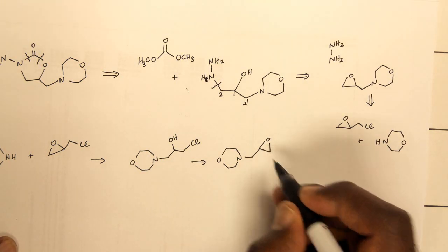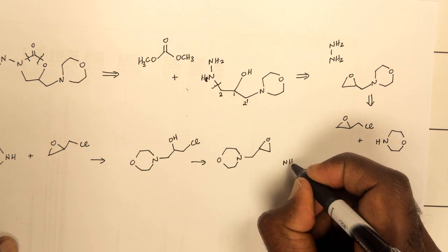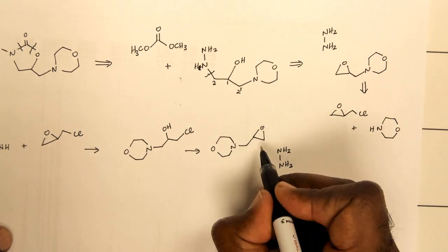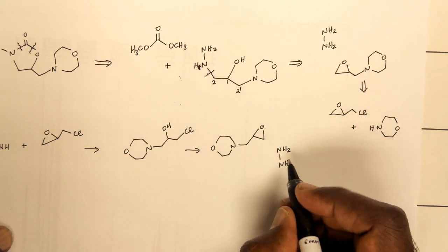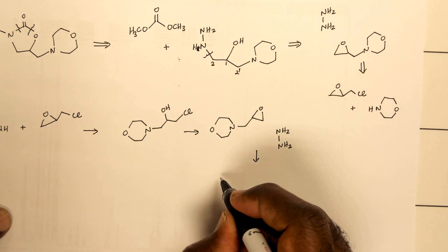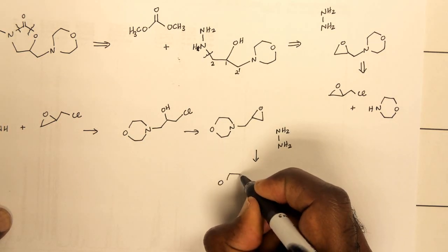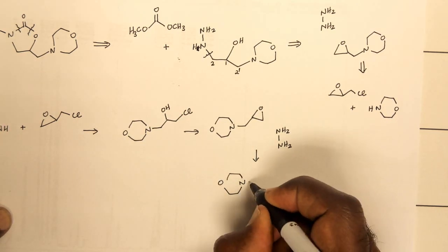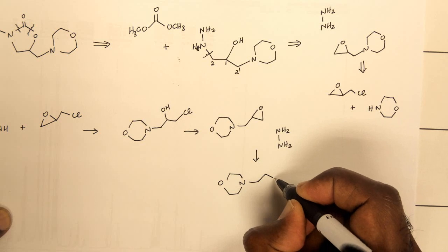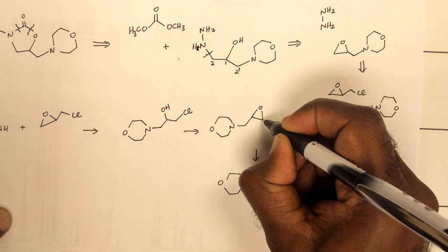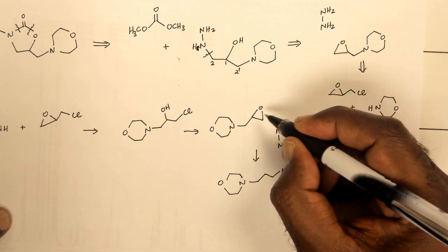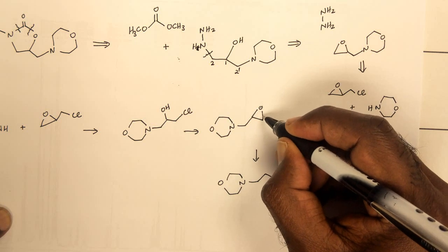Once you have this moiety in there, the hydrazine would now react with this epoxide, which would mean that you add the hydrazine moiety to this particular structure. I'm keeping my 3 carbon atoms in there. I've added the hydrazine to that particular carbon. The central carbon still has the oxygen in it because this bond will break.